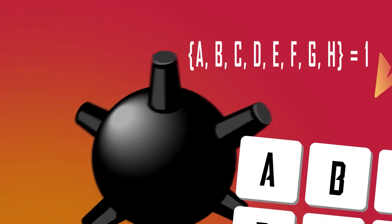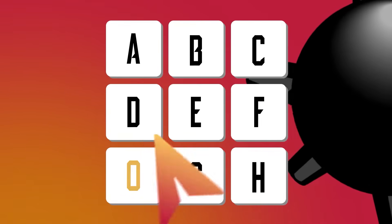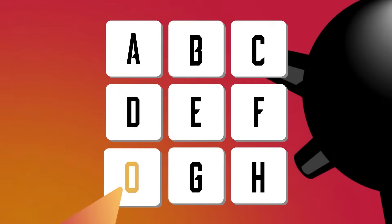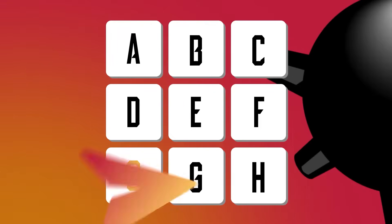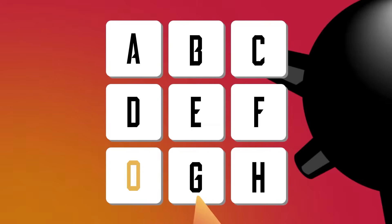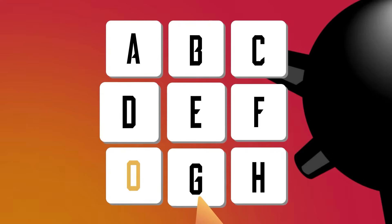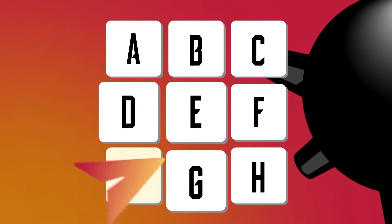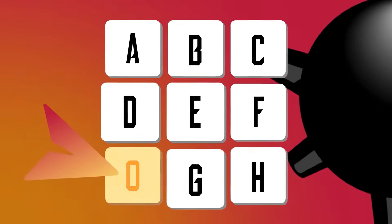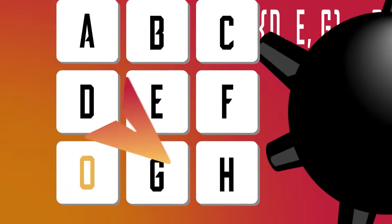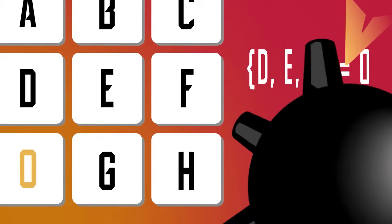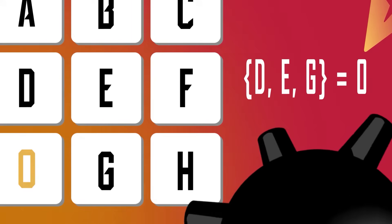Now, if we consider this board, we can tell that there are no mines on cells E, D, and G because they are the only neighbors of the cell with count 0. So we would represent that as D, E, G = 0.